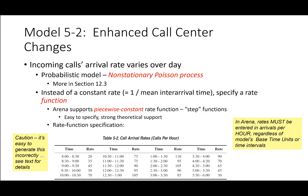Moving to Model 5.2, we make changes for the enhanced call center. Incoming call arrival rate varies over the day rather than being static. We use the non-stationary Poisson process, covered more in section 12-3 of the textbook. Instead of a constant rate, we specify a rate function. ARENA supports a piecewise constant step function rate specification, with call arrival times and calls per hour specified per half-hour period throughout the day. This is very common in the real world, as volume rarely is uniform — there are typically peaks and valleys to account for.